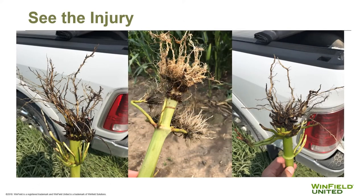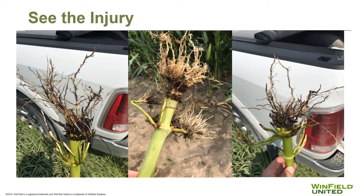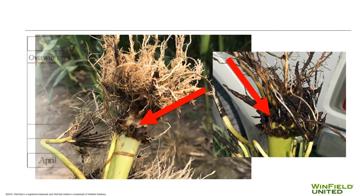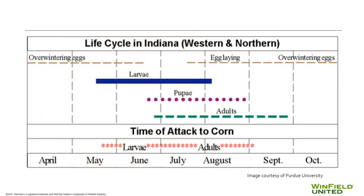Let's have a look at the root injury caused by the larvae of these three different species. Note that numerous roots are missing from the nodes of the corn root. This feeding is the result of the larvae from earlier in the growing season.